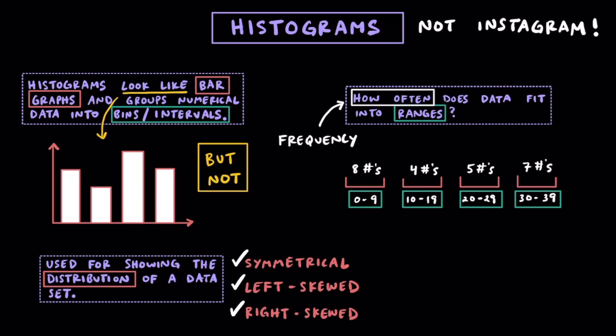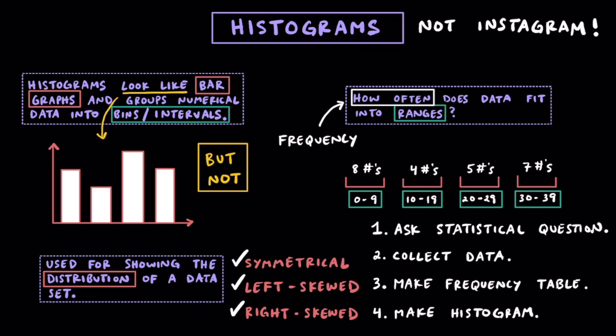To understand in the big picture how you would use histograms, first, we would ask a statistical question, then we would collect data on that. Third, we would then make a frequency table to organize our information into intervals, and then fourth, and finally, we would be able to make a histogram. These would be the four steps we would do in order.